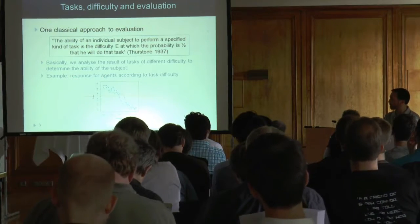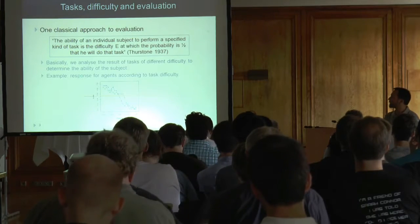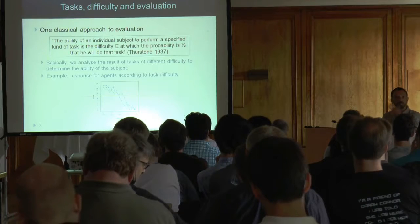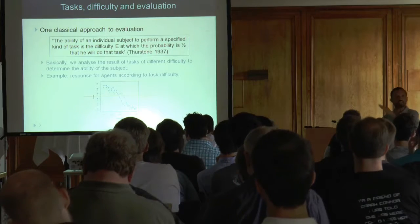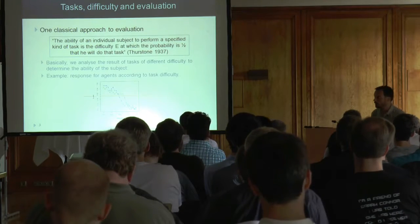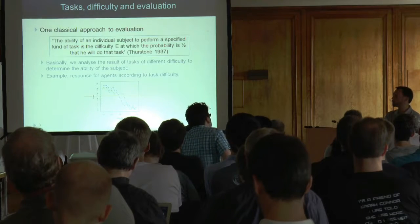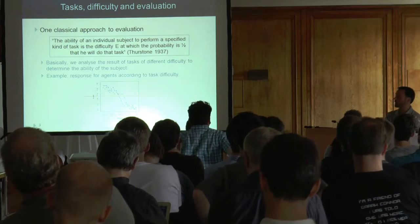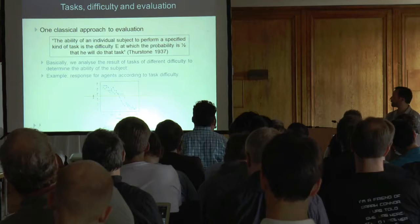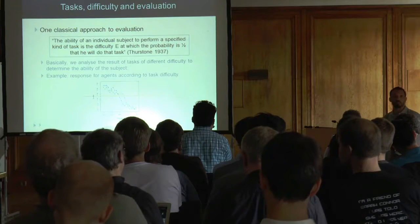A difficulty function must have some properties, detailed in the paper. It doesn't have to be monotonic, but in general we want that as the task gets more difficult we expect lower results from agents. If you find an agent that gets better with higher difficulties, your notion of difficulty is not correct. Ideally, performance goes to zero, so you can calculate the area and compare two systems by comparing the area according to difficulty — a nice approach borrowed from psychometrics' item response theory.